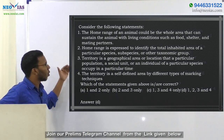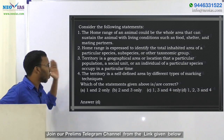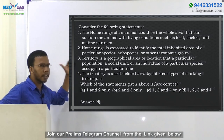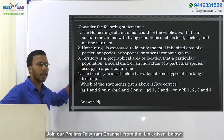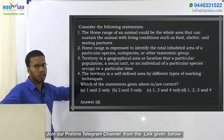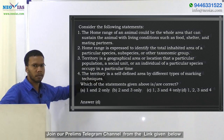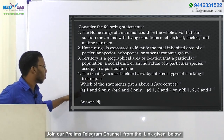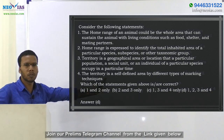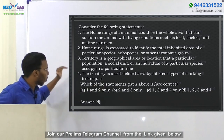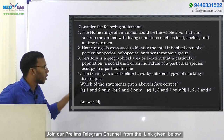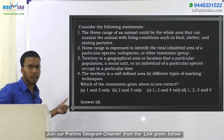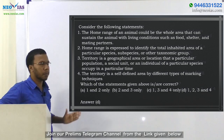The third statement — territory is a geographical area or location that a particular population, social unit, or individual of a species occupies at a particular time — is also correct, as it regards a small population or individual over a particular time, so we eliminate option A. Therefore, the answer is D — all four statements are correct. The fourth statement, that territory is a self-defined area by different types of marking techniques, is also correct.